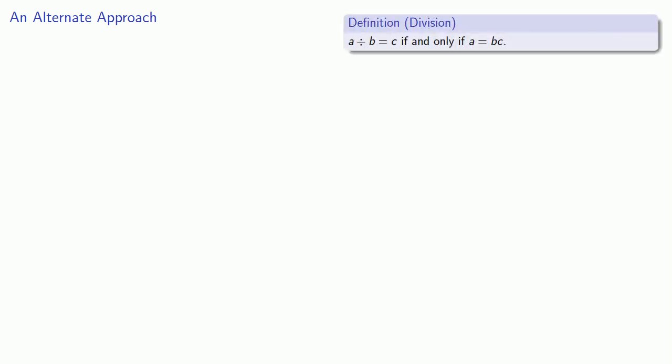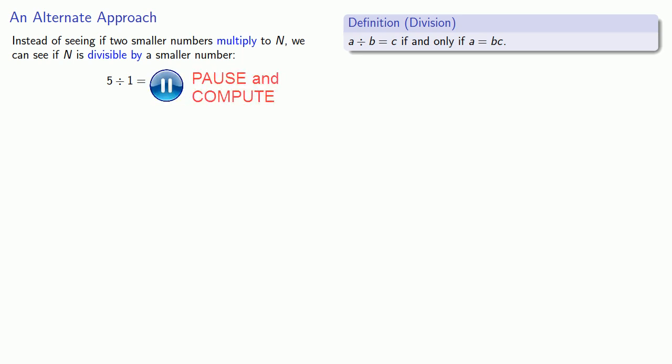A divided by B is equal to C, if and only if A is equal to B times C. And what this means is that if I can write a number as a product, then I can do a division that comes out evenly. So instead of seeing if two smaller numbers multiply to N, we can see if N is divisible by a smaller number. So we could try dividing 5 by the smaller numbers. So we find 5 divided by 1. And our definition of division says that since 5 divided by 1 is 5, then we know that 5 is equal to 1 times 5. And we've written 5 as a product.